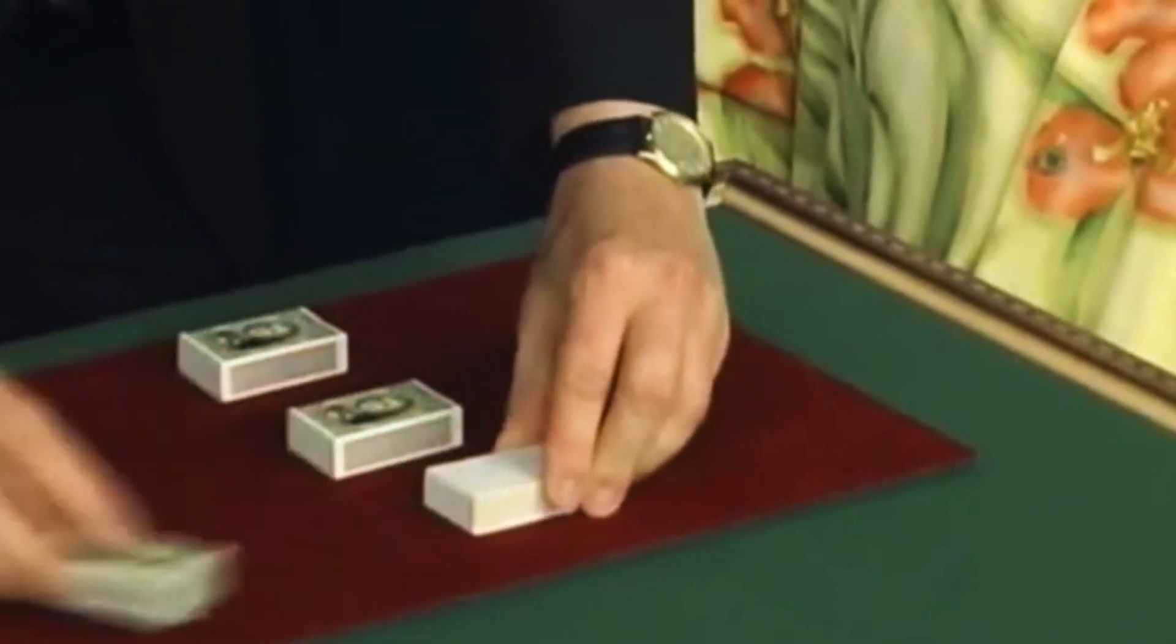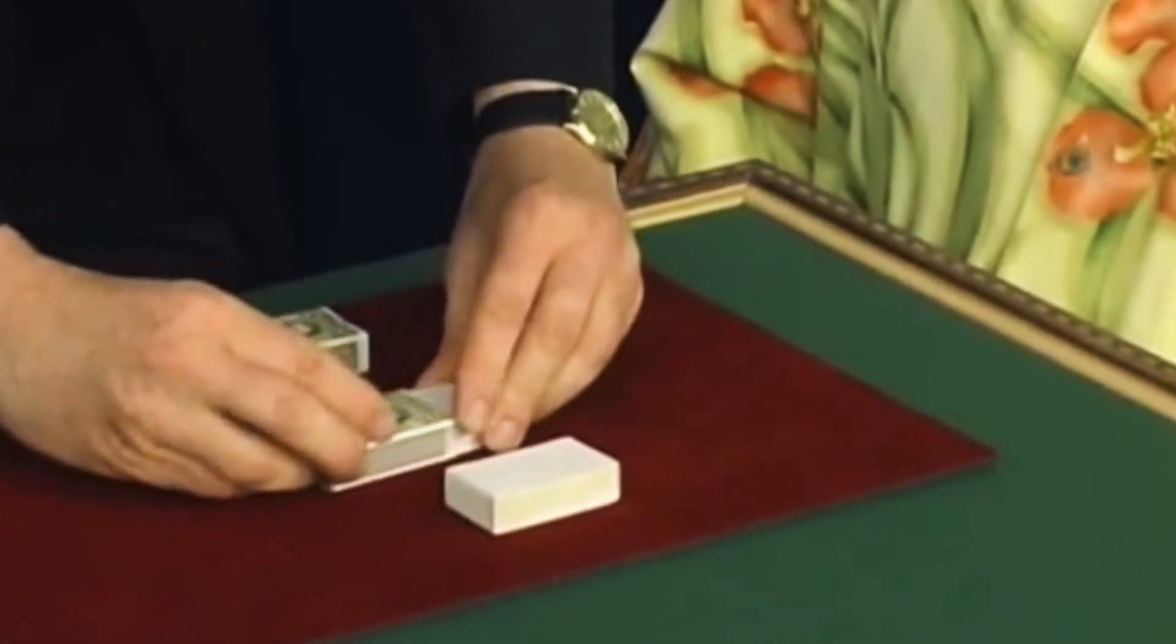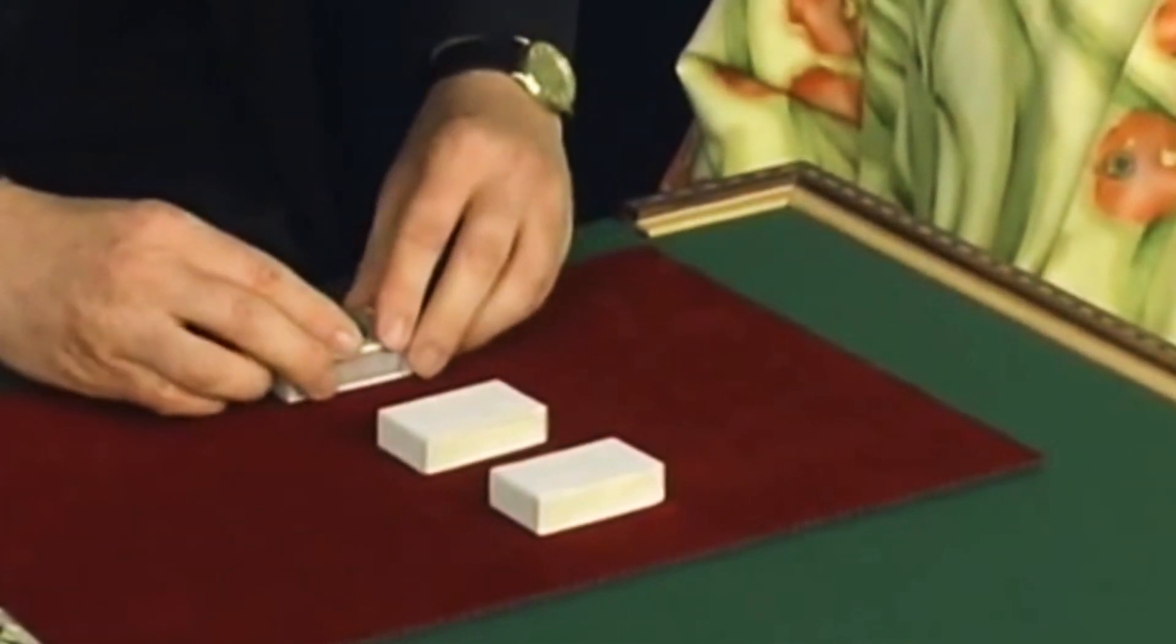You may have seen them do something that they call the Walnut Shell and Pea Game. And it normally uses three walnut shells and a little sponge pea.